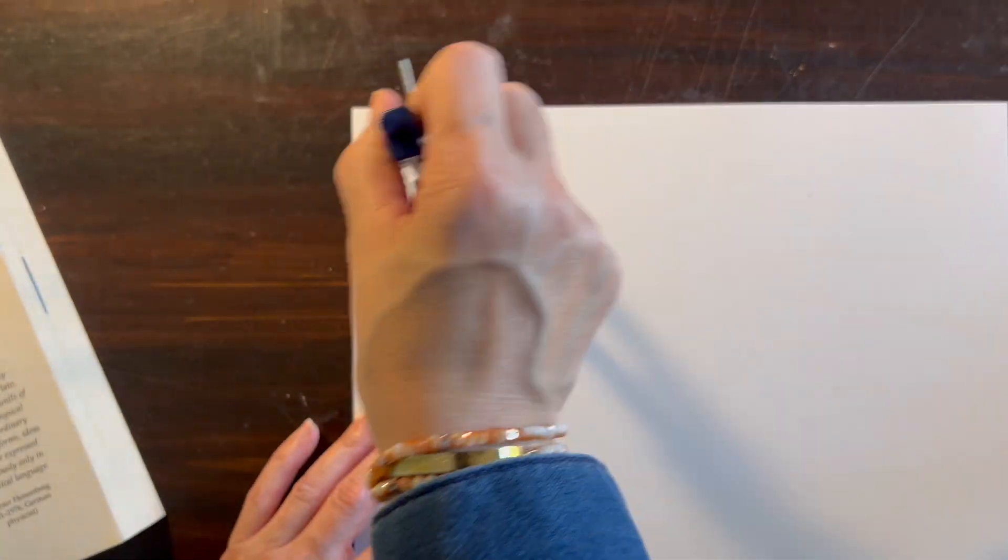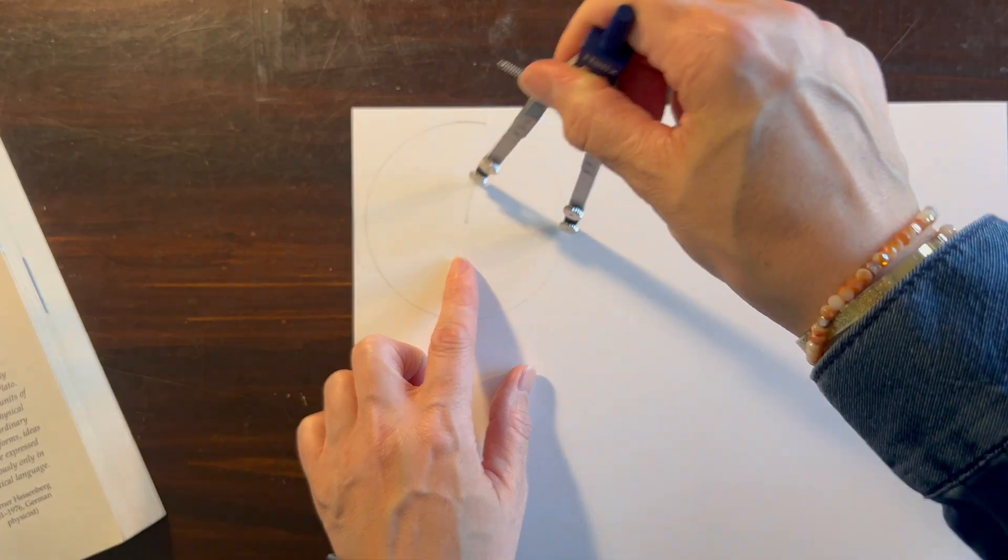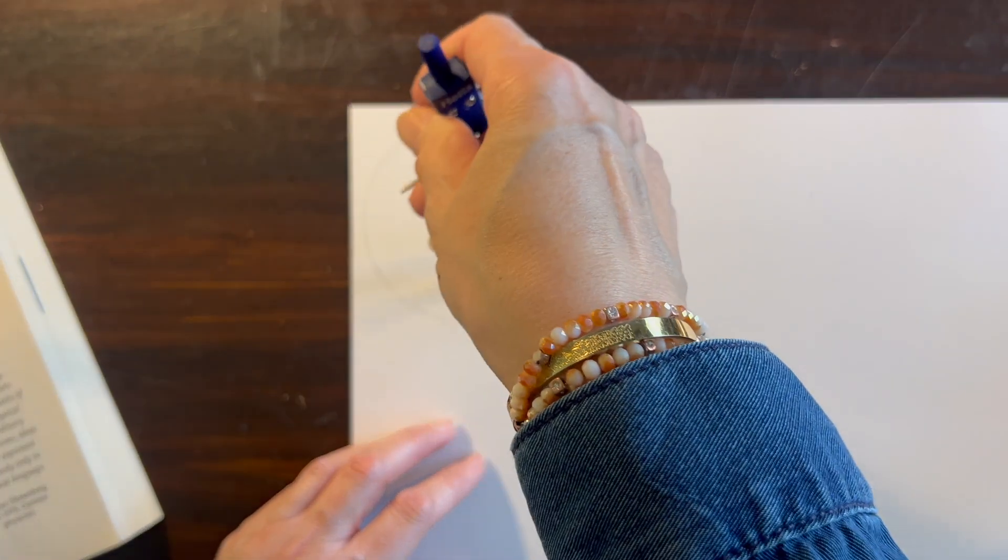I'm going to start by doing one circle and then placing my compass on the circumference to draw the second circle.